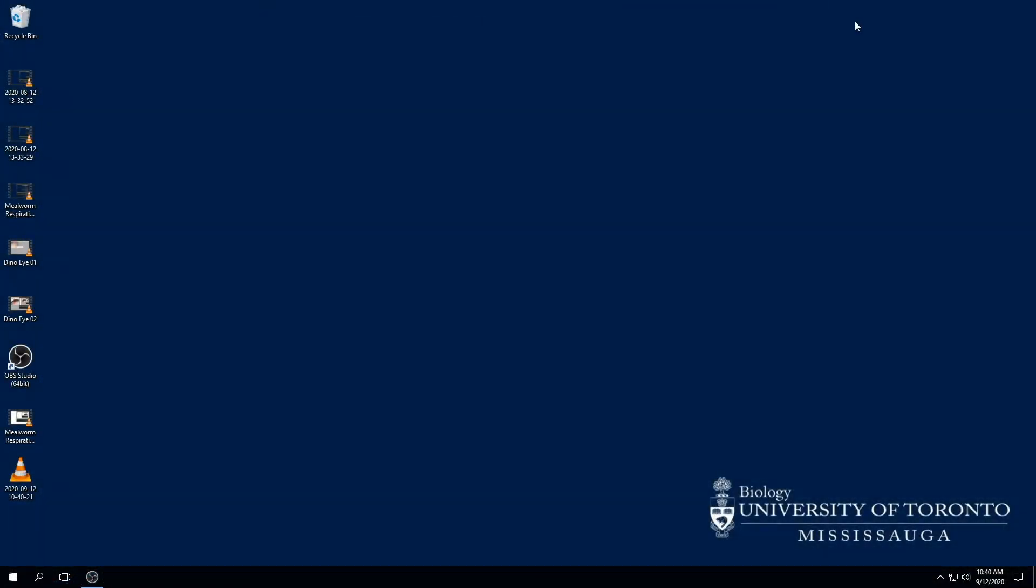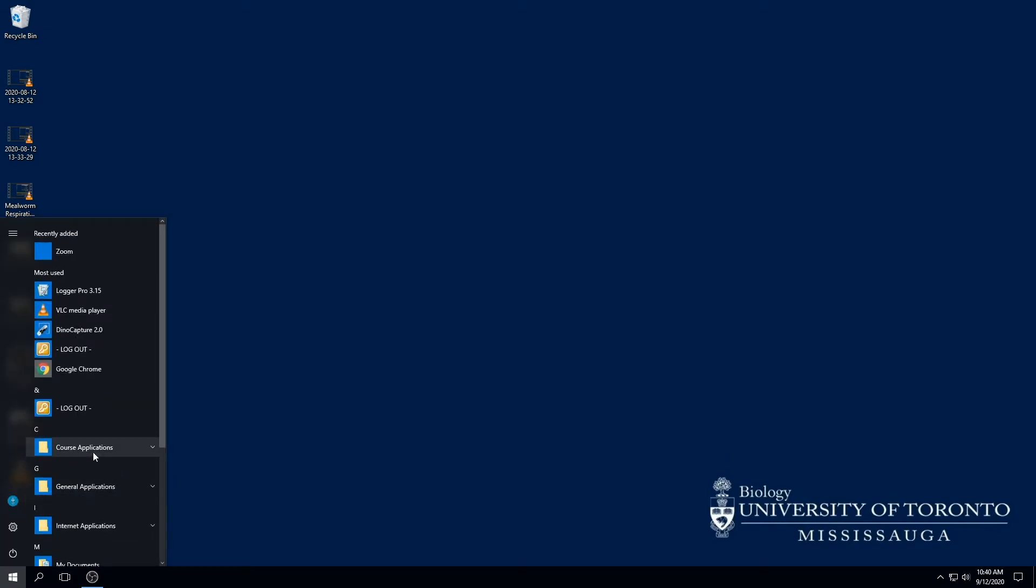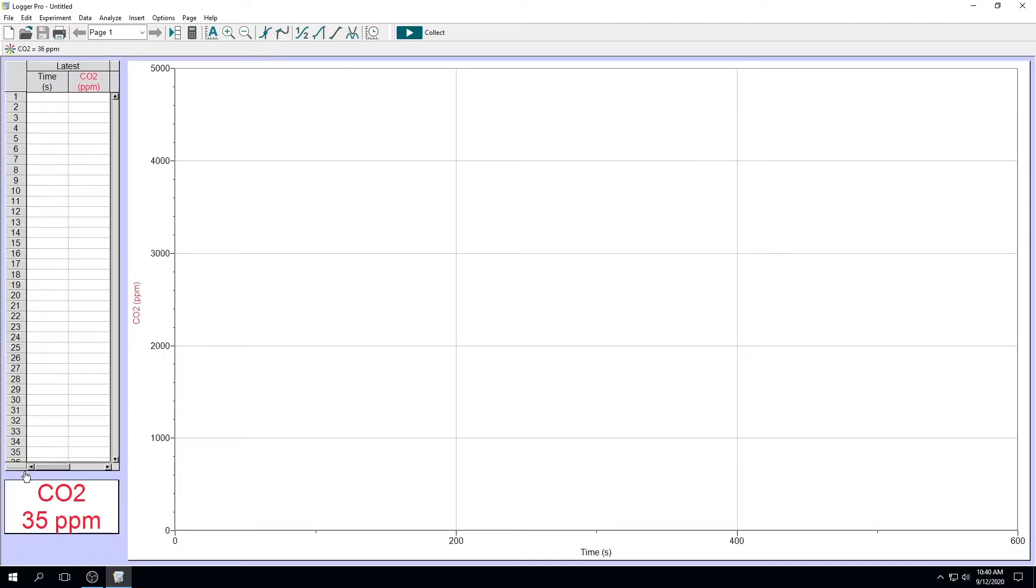Turn on the LoggerPro software. You can find it under the Start menu, Course Applications, and scroll down to LoggerPro. You should see your carbon dioxide reading down here in the lower left corner. In the beginning, you'll notice that the readings are quite low. This is because the carbon dioxide sensor needs some time to warm up before it is ready to be used.